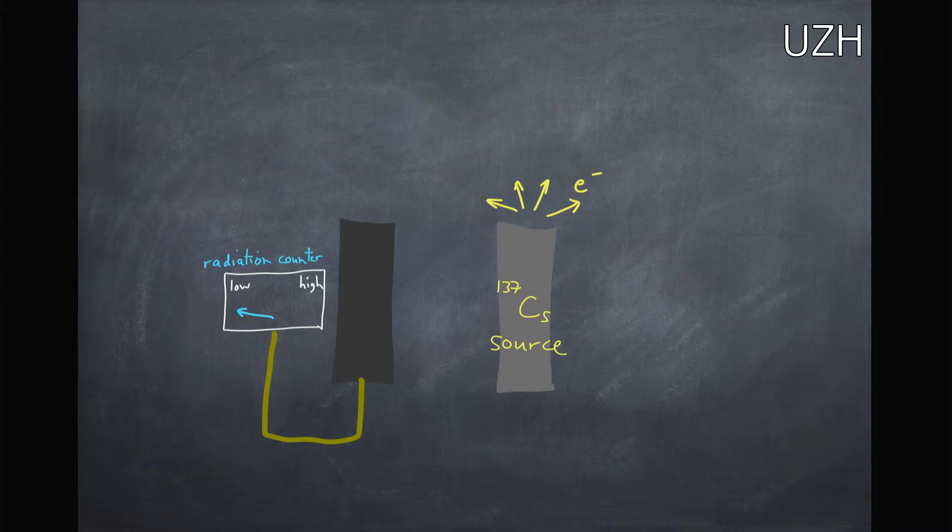And so here we are, we've got our source here, it's emitting electrons, then we have a radiation counter here, and what we're going to do is, to do this trick, is we are going to get a magnet and our magnet is going to look like this, I have a little gap in between.